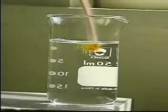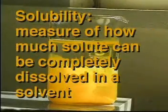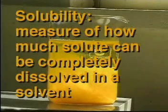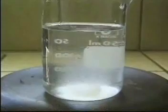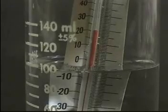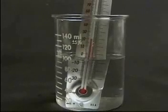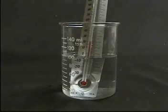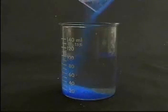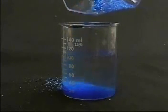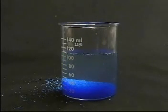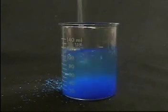Solubility is a measure of how much solute can be completely dissolved in a solvent. There is a limit to how much solute can dissolve in a solvent. In other words, a solvent such as water can only dissolve so much sugar before the sugar remains on the bottom of the beaker. Solubility is usually expressed in terms of grams of solute that can be dissolved in 100 milliliters of water at a specific temperature, usually 20 degrees centigrade. For example, the solubility of copper sulfate (CuSO4) is about 32 grams per 100 milliliters of water at 20 degrees centigrade. If more copper sulfate is added at this temperature, it will not dissolve and will remain as a solid.